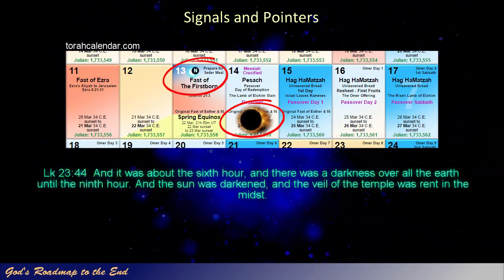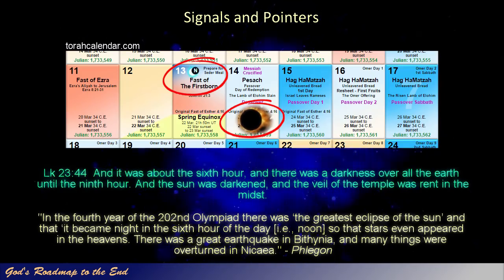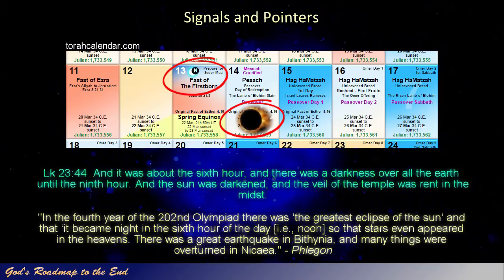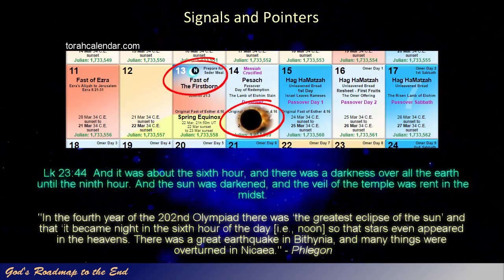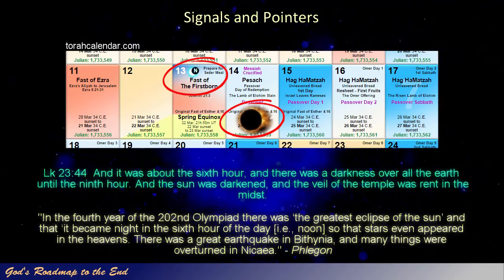This is what the Greek historian Phlegon wrote: 'In the fourth year of the 202nd Olympiad, there was the greatest eclipse of the sun, and that it became night in the sixth hour of the day, so that stars even appeared in the heavens. There was a great earthquake in Bithynia, and many things were overturned in Nicaea.'